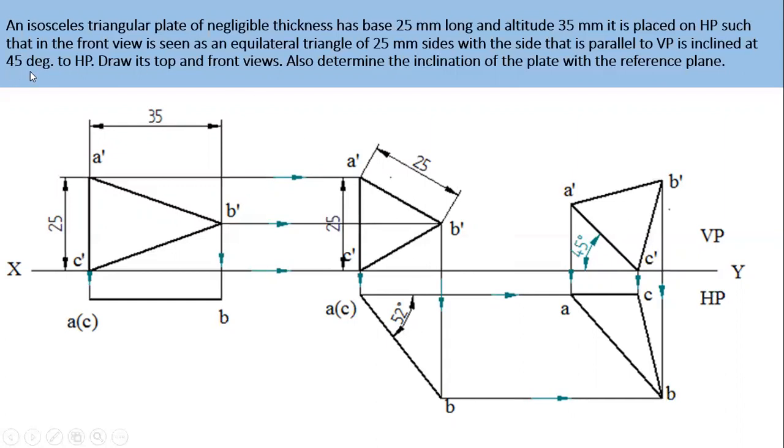Third position he says that with the side that is parallel to VP. The side parallel to VP is A' and C'. That side should be inclined to HP at 45 degrees. First draw a 45 degree line. Take the dimension A' to C' cut on the 45 degree inclination line. Then again take A' to B' from A' cut an arc. Again measure C' to B' from C' cut another arc. You will get point B'. So connect A' to B' and B' to C'.